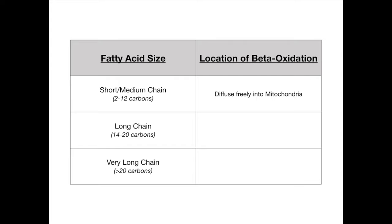Long chain fatty acids require carnitine transport to get into the mitochondria for beta-oxidation to occur — this is the highest yield of the three. Very long chain fatty acids, those with more than 20 carbons, have to be oxidized inside a peroxisome because they're too big to be processed anywhere else, requiring the heavy-duty peroxisomal process.